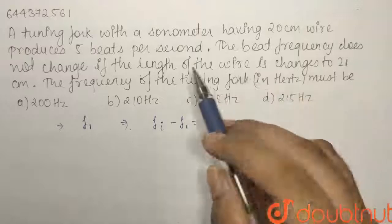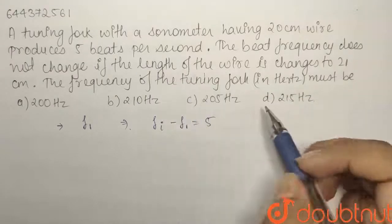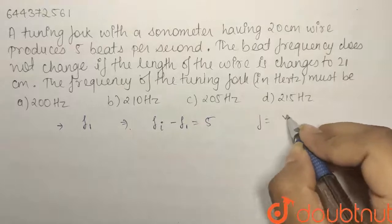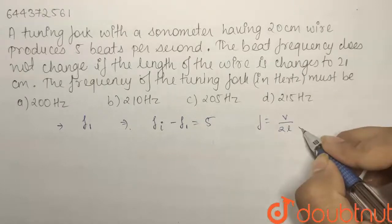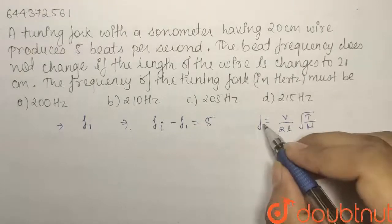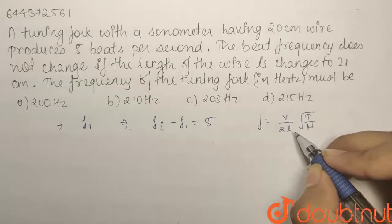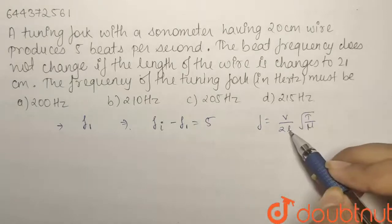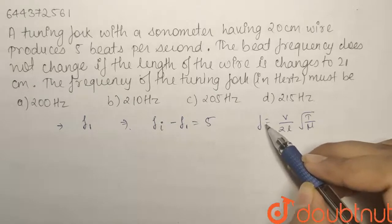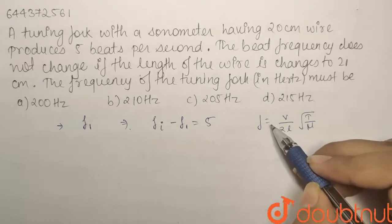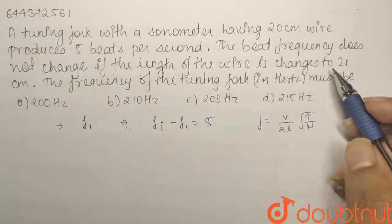Now what we are doing is increasing the length of the wire. We know that frequency is given by v by 2l under root t by mu. The frequency is inversely proportional to length. So if you increase the length to 21 centimeter the frequency is going to decrease but the number of beats is not changing.